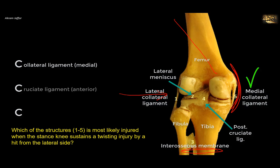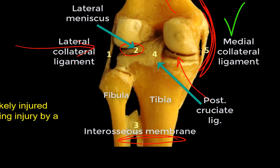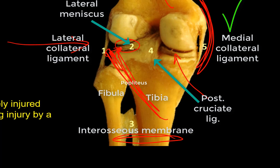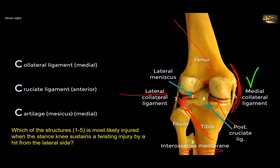The second C is the cruciate ligament — in this case the anterior cruciate ligament, which is not shown here. The third C is the cartilage, or meniscus — in this case the medial meniscus, which is attached to the medial collateral ligament. By contrast, the lateral meniscus is separated from the lateral collateral ligament, and can be pushed out of harm's way by the popliteus muscle, which sends some fibers to attach to the lateral meniscus. So the answer is structure 5: the medial collateral ligament.